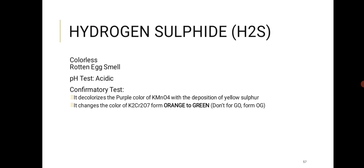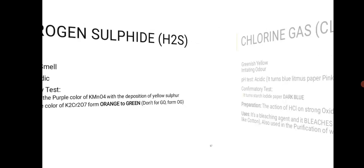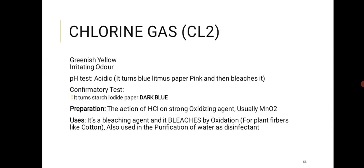Hydrogen sulfide (H2S) is colorless with a rotten egg odor. It is acidic. Confirmatory test: it decolorizes the purple color of KMnO4 with deposition of yellow sulfur — the reduction of KMnO4 changes the color from purple to colorless, and the yellow sulfur deposits are visible. It also changes the color of K2Cr2O7 from orange to green (OG — orange to green, not gold).